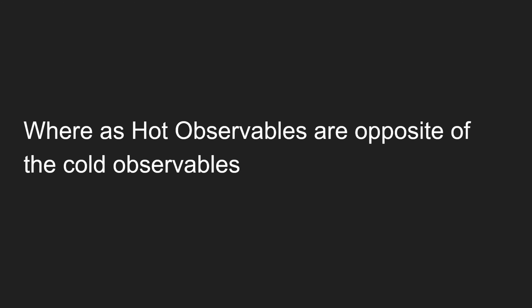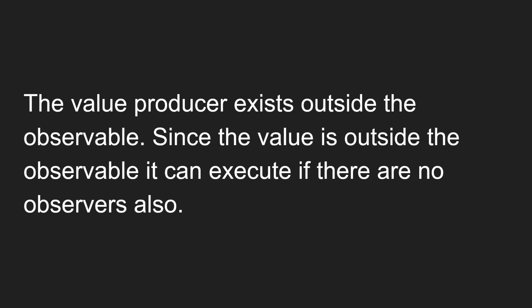Hot observables are completely opposite of cold observables. In a cold observable, one observer executes at a time and the logic for generating values is defined inside the observable, making it unicast. Hot observables are entirely opposite: the value producer — the value which is produced — exists outside the observable. Since the value is outside the observable, it can execute even if there are no observers. In a cold observable, only when you subscribe does the logic inside execute; whereas a hot observable executes even when there are no observers.